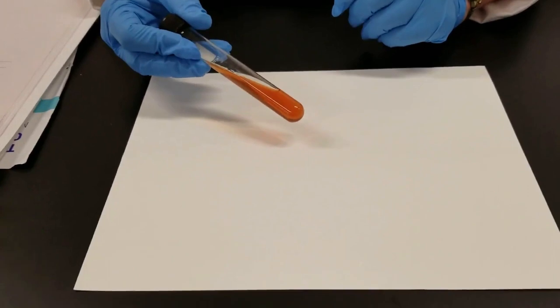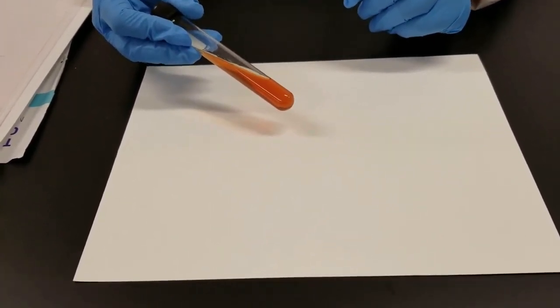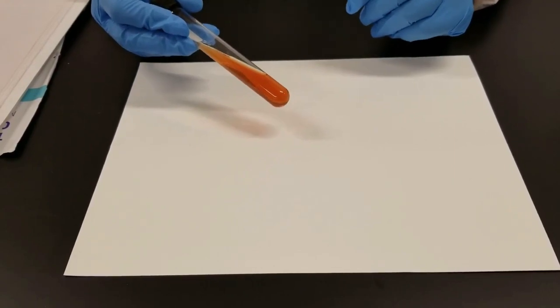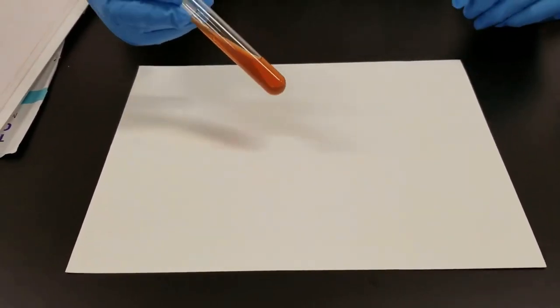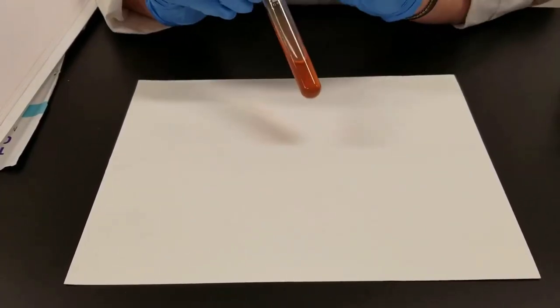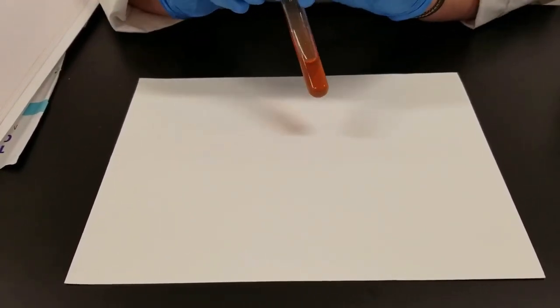This is a TSI tube, triple sugar iron. It contains three carbohydrates: glucose, lactose, and sucrose. And then it has phenol red as a pH indicator. So at neutral pH, it's going to be kind of an orangish color. If it becomes acidic, it will turn yellow.